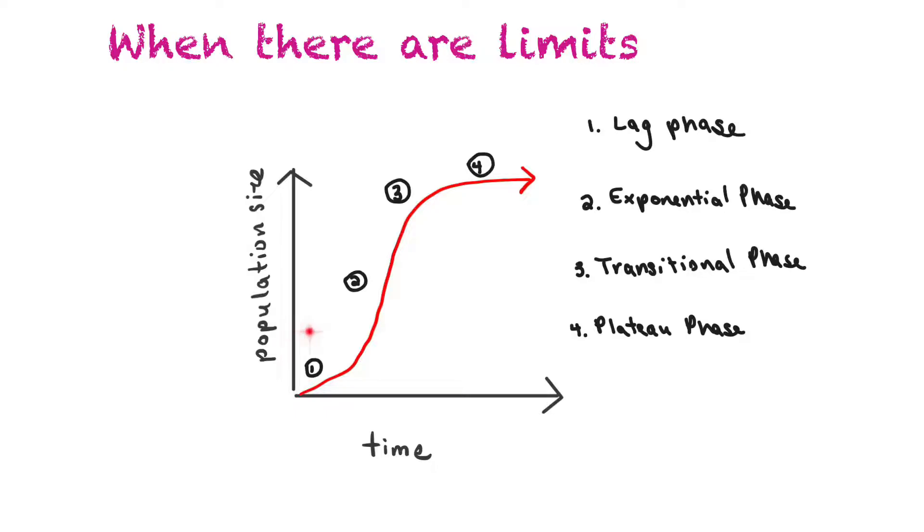If a population established there would be a lag phase because they are becoming adjusted to the environment that they have just settled in. And then over time they would start to grow exponentially. So there's an exponential phase.